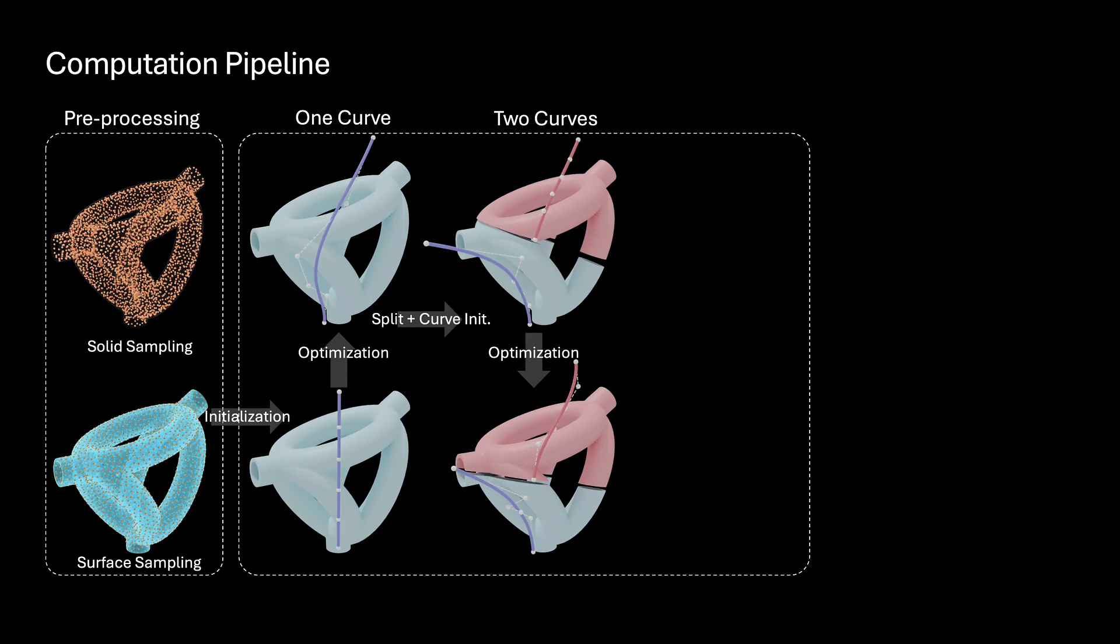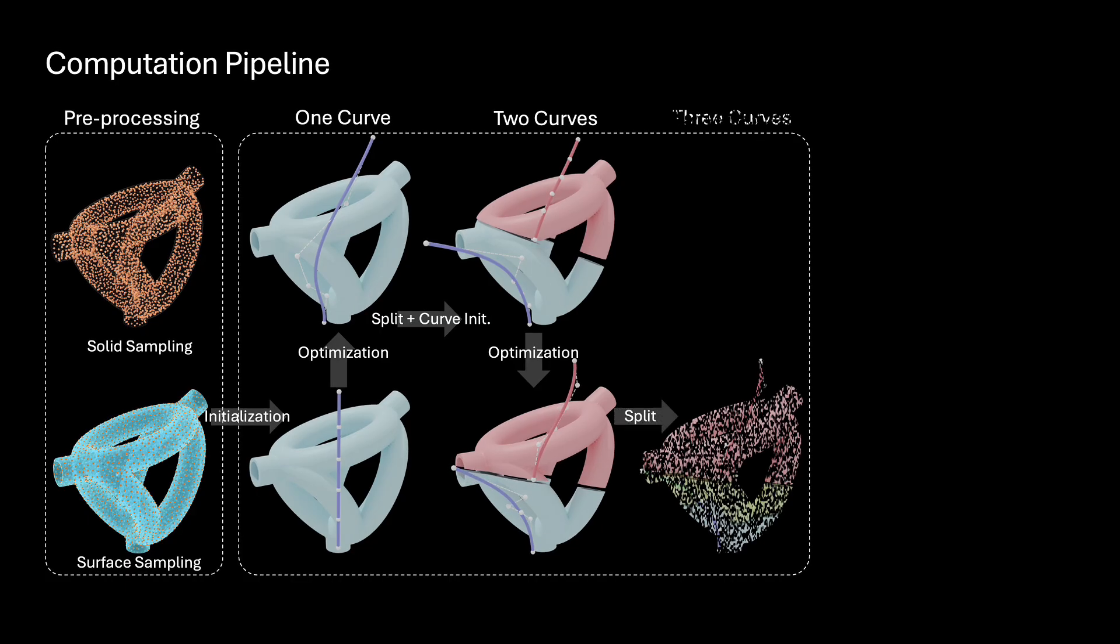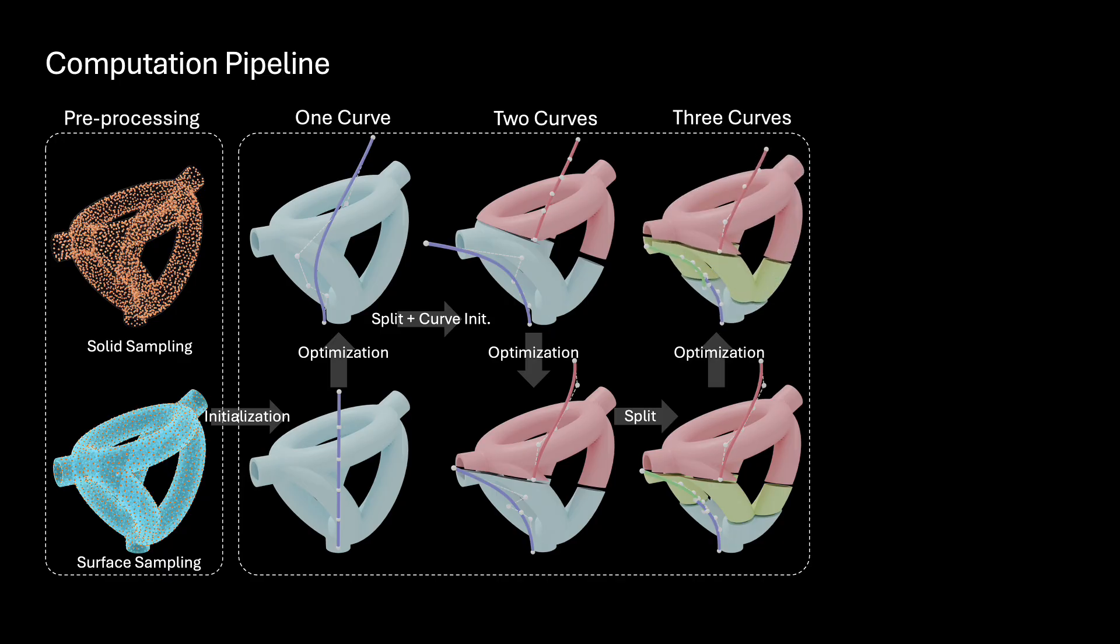The region with cliff angles in the lower part is further split into two. Three curves together with the partition are optimized to achieve the converged result.